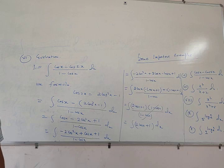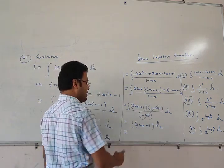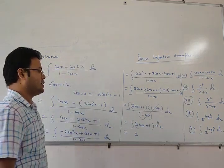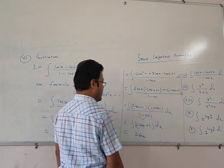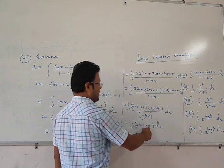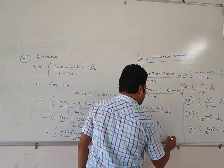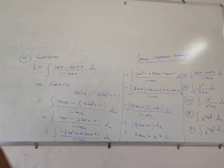We get 2 cos x + 1. You can integrate 2 cos x + 1 with respect to x directly using the formula. Integration of cos x is sin x, so we get 2 sin x + x + c. Here is the solution.